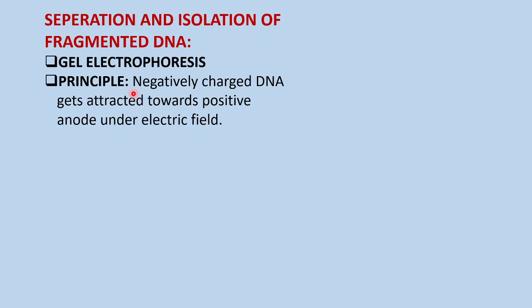The gel piece is made up of agarose. The principle applied is that DNA is negatively charged — due to the presence of the carboxyl group — and it gets attracted towards the positive anode under an electric field. There is a cathode and anode at two ends; you place the DNA towards the cathode, apply current, and the DNA will automatically move towards the positive end. That very principle is applied in gel electrophoresis to obtain separated fragments of DNA.